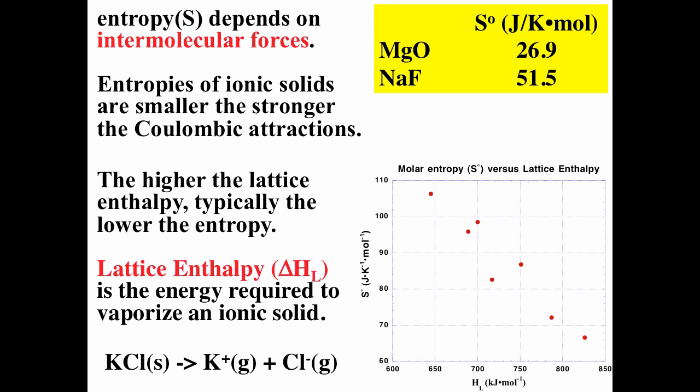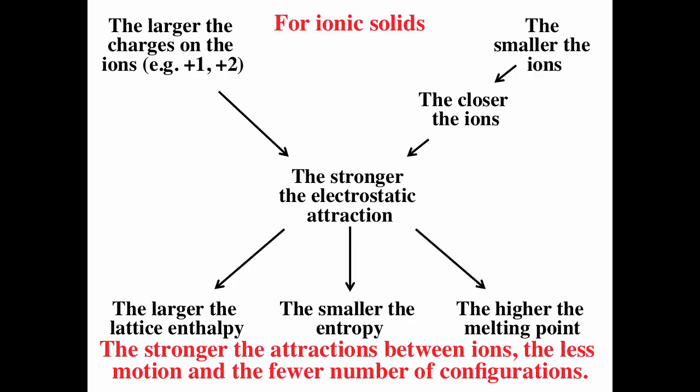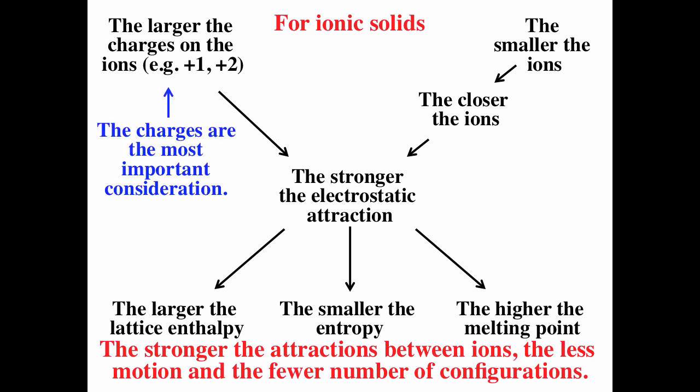Lattice enthalpy is a measure of the strength of ion-ion interaction — specifically the energy required to go from the ionic solid to the gaseous ions. On the graph, entropy is plotted versus lattice enthalpy. The stronger the ion-ion interaction, the larger the lattice enthalpy, and the lower the entropy. The smaller the lattice enthalpy, the weaker the ion-ion interaction, the higher the entropy. For ionic solids, the larger the charges, the stronger the electrostatic interaction; the smaller the ions, the closer they are and the stronger the interaction. The stronger electrostatic interaction leads to larger lattice enthalpy, smaller entropy, and a higher melting point.